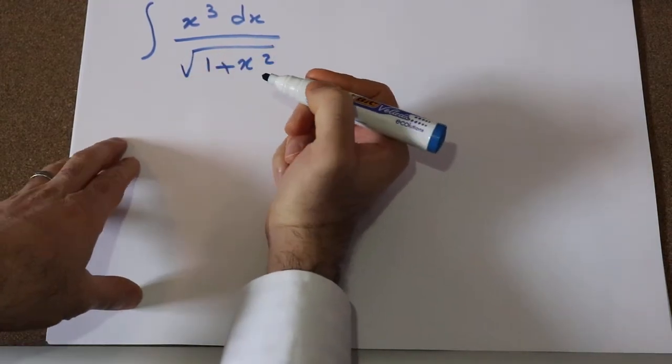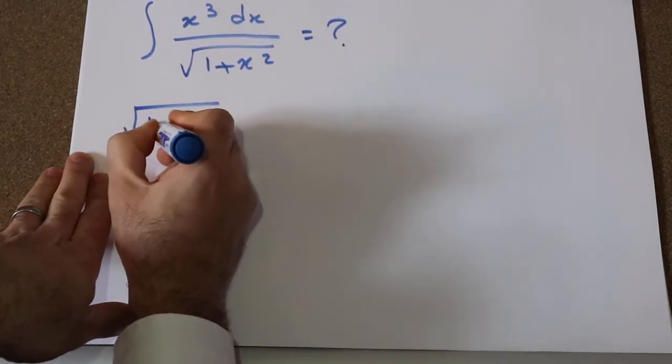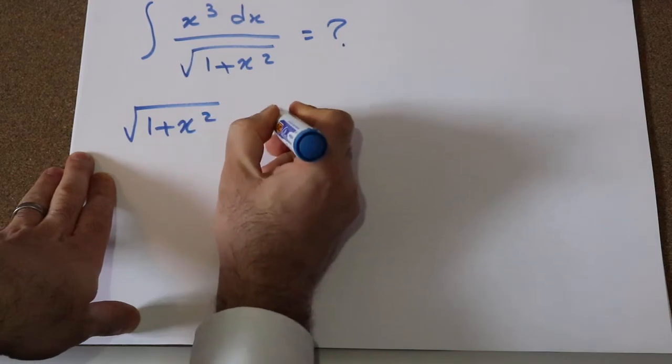Okay, so you can solve this integral using the substitution rule. If you define square root of 1 plus x² as u,